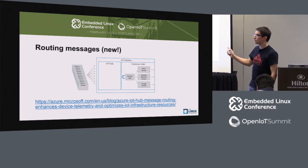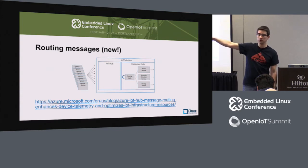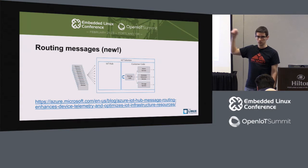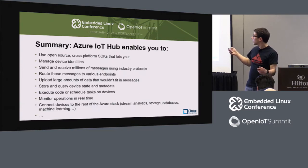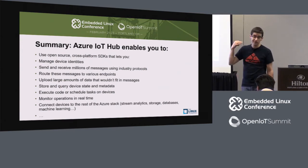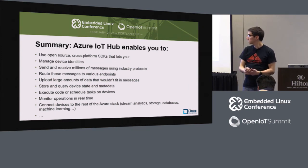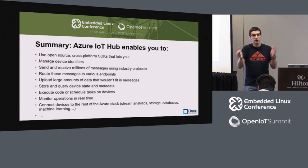I've included way more stuff in the presentation links — you can download everything, including sample code showing all these primitives: telemetry, twins. They're just one-line-of-code APIs. So yeah, we have a bunch of SDKs for devices. You can manage device identities, handle millions of messages, route messages to endpoints, upload files, store and query device states, execute code, and monitor operations. That's what IoT Hub is for.